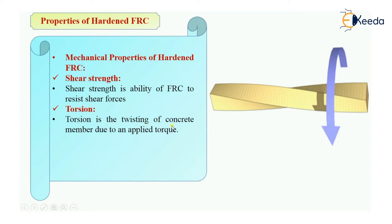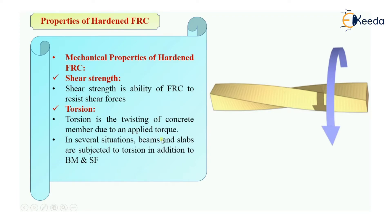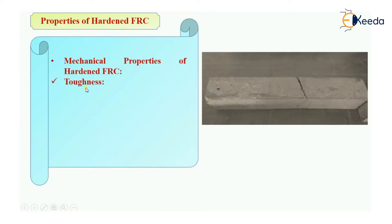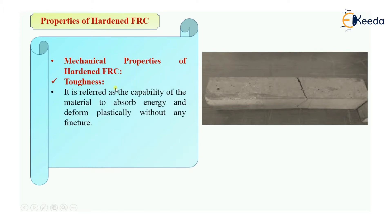The next mechanical property is torsion, which is the twisting of a concrete member. In our case, if a fiber-reinforced concrete member is twisted due to an applied torque, that is called torsion. As shown in the picture, a moment or torque is applied over a beam causing it to twist. In several situations, beams and slabs are subjected to torsion in addition to bending moment and shear forces.